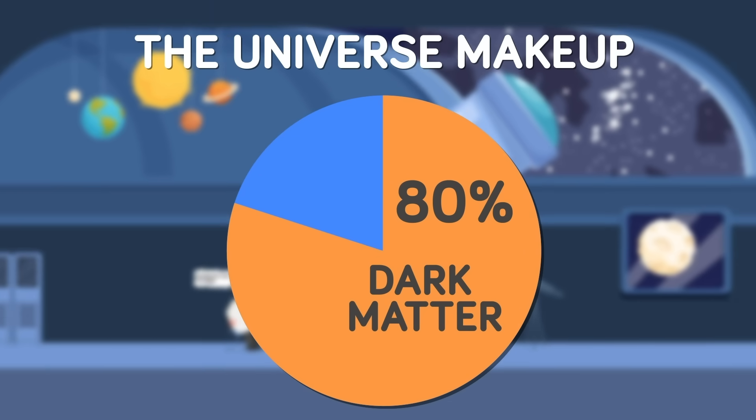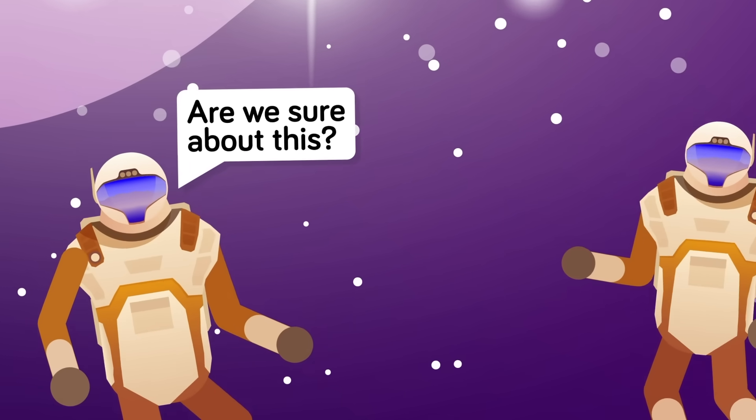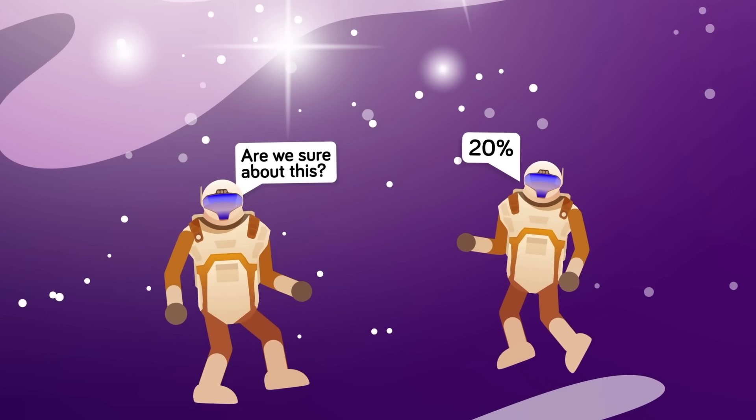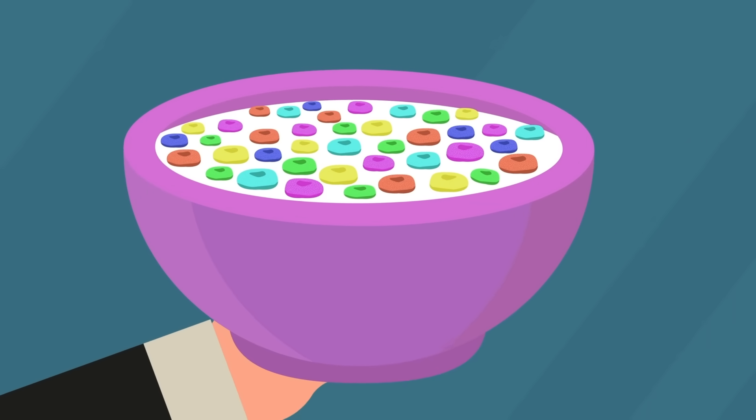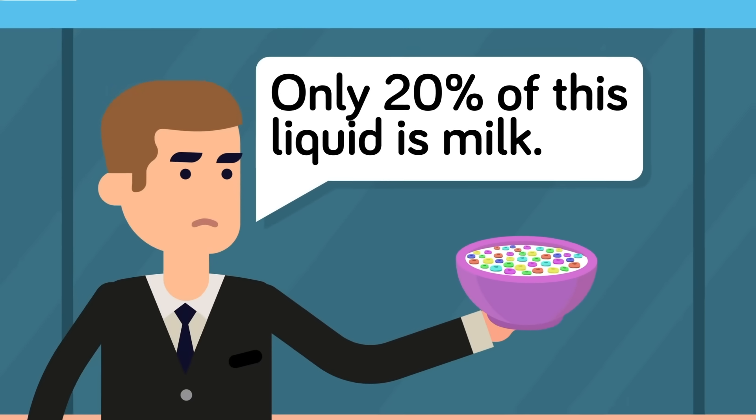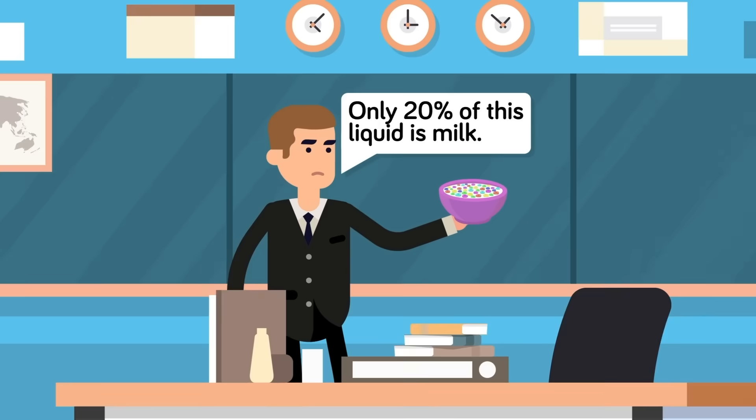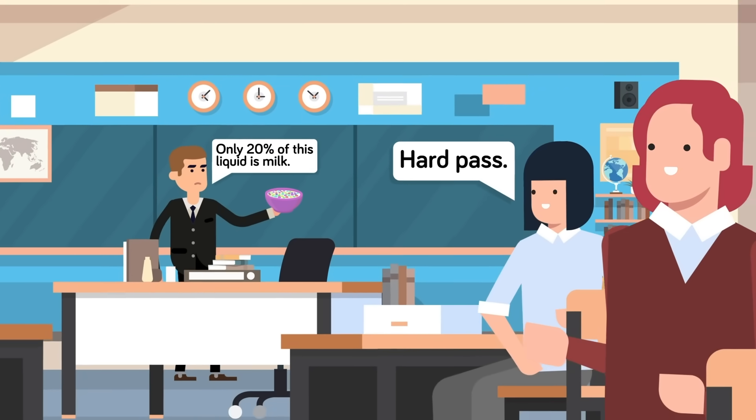To say that this is a crisis of science would be an understatement. Imagine if you could only account for 20% of anything. Imagine if you poured a bowl of cereal, and your cereal was floating, suspended in a liquid of some sort, but you could only identify 20% of that liquid as milk. The rest of what's in your cereal bowl you can't even directly observe.